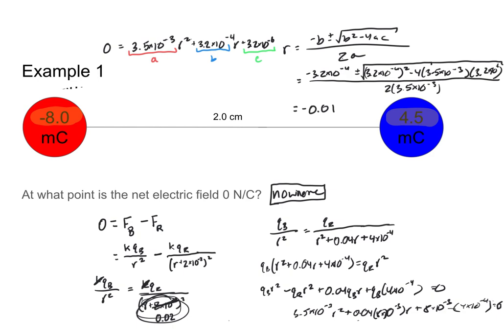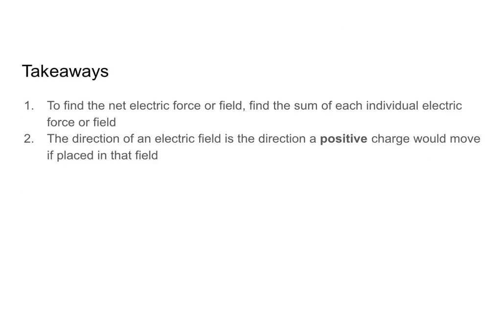You have now seen the hardest question I can ask you on this topic, so I think we're ready for takeaways. To find the net electric force or field, find the sum of each individual electric force or field. The direction of an electric field is the direction a positive charge would move if placed in that field. Those are the key takeaways for this video. It is now your turn to solve some advanced questions on your own. Best of luck and happy solving!